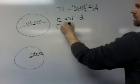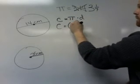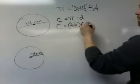And then what you do is you replace each of the letters with a value that you know. So pi is 3 and 1/7 in this problem times, and the diameter in this problem is 14.